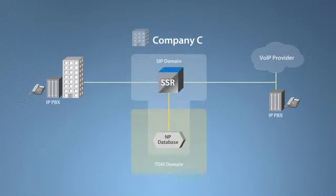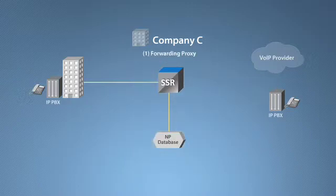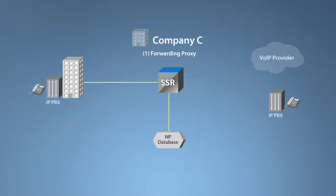The SSR provides NP services to the SIP domain in one of three ways. As a forwarding proxy, the SSR receives a request from an originating user agent such as an IP PBX. The SSR performs the NP function and then forwards the request to the appropriate SIP endpoint or terminating operator for call completion.